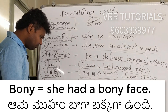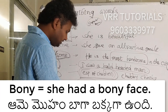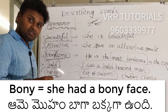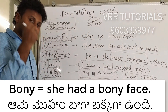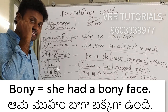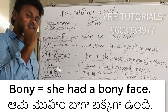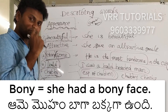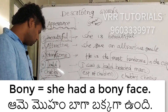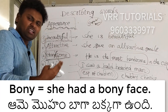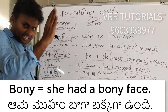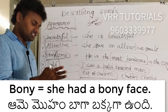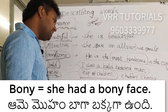The next word is 'bony'. For example: 'She had a bony face.' Bony means so thin that your bones can be seen — the flesh is minimal and the bones are visible through the skin. It describes someone who looks like a skeleton with just skin over the bones. 'She had a bony face' means an extremely thin face.